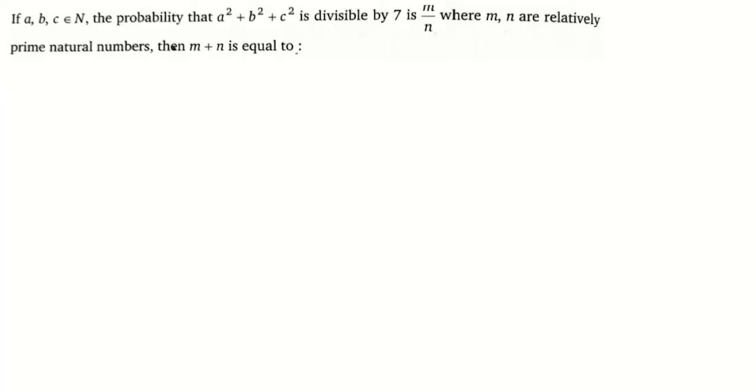Now if the question is: if a, b, c are natural numbers, then the probability that a² + b² + c² is divisible by 7 is m/n. Then m + n is equal to?